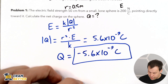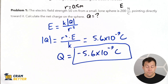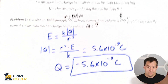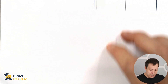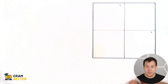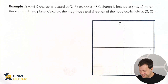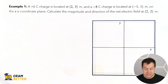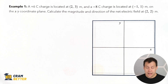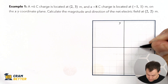Electric field is a vector, which means you might have to do some vector algebra. This next problem has a coordinate axis supplied — not a good sign. So let's do this one together. We have a plus 6 coulomb charge located at (2, 3) — I'll draw that on my picture. That's charge number 1, Q1.